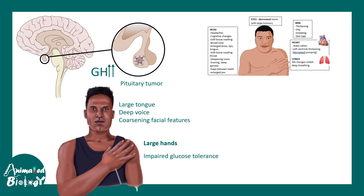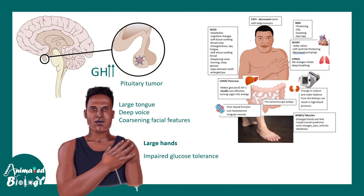There can be heart-related issues with malforming valves and left ventricular hypertrophy. There can be lung-related issues as well, and a multitude of other problems can occur in these individuals. So even though they may have a very large, strong-looking body, the internal organs are in many ways compromised.